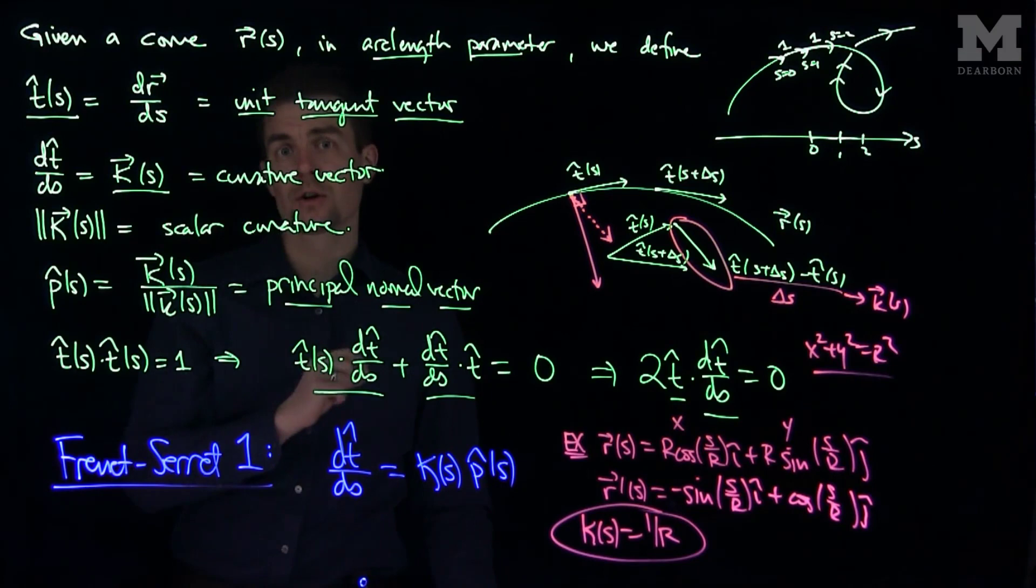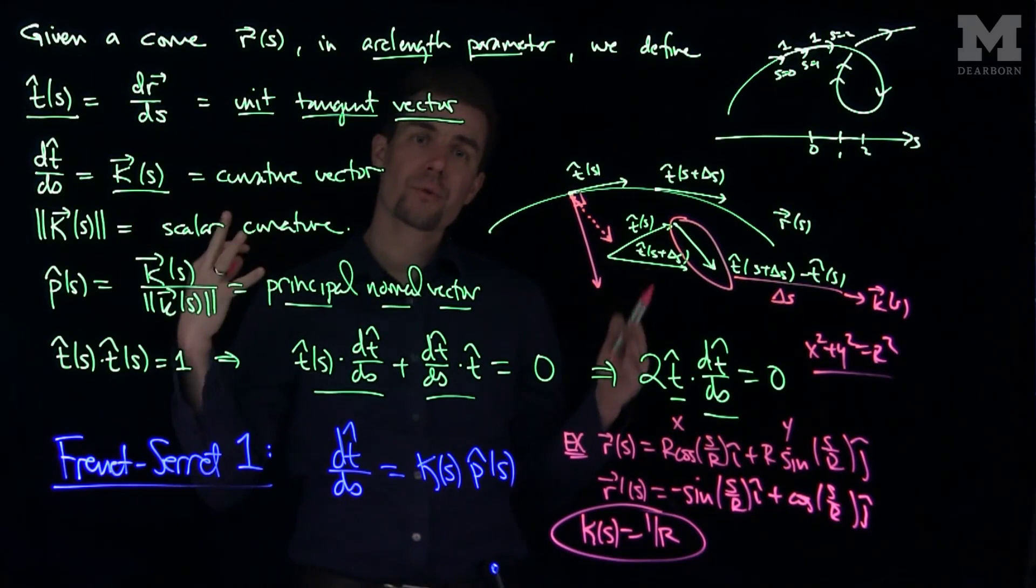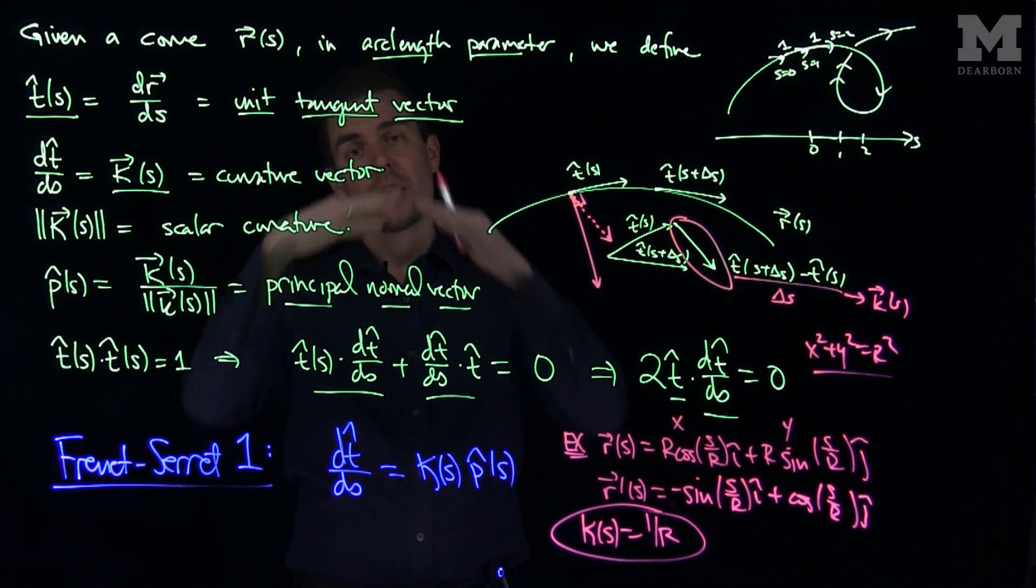And so what this tells us is that the curvature of a circle whose radius is r is the reciprocal of r. So the larger r gets, the larger the radius the circle becomes, the smaller the curvature becomes.